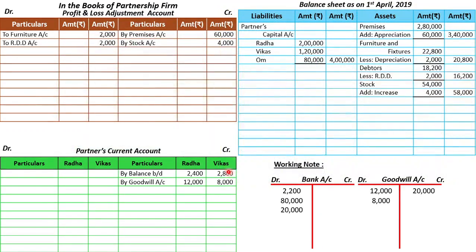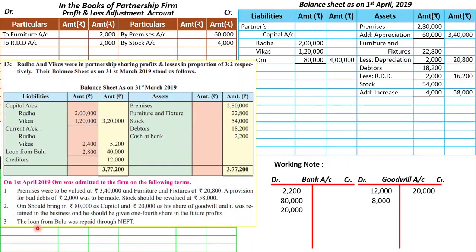Third adjustment: the loan from Balu was repaid through NEFT. Let's check — loan from Balu is 40,000 rupees. Repaying Balu means money is going out from our side. In the future balance sheet, loan from Balu will not appear because it has been fully repaid. So one effect goes directly to the credit side of the bank account — 40,000 rupees — because the money is going out.